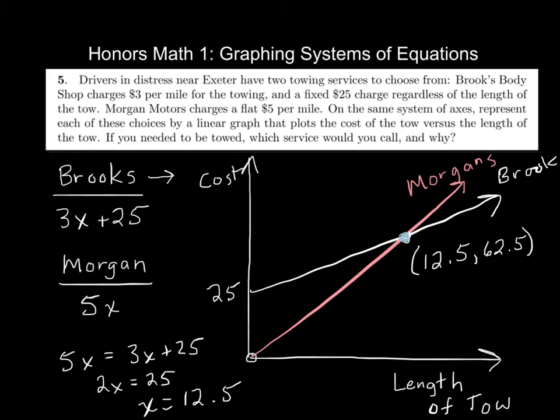And that cost is 62.5. So then, if you're writing this down, which I'm just going to say it verbally here. The question is, if you needed to be towed, which service would you use, would you call, and why? It depends on how far you're going. So you could say, if I were going less than 12 and a half miles, I would use Morgan's. Morgan's line is below Brooke's line, up to 12 and a half miles. Because that would be cheaper.